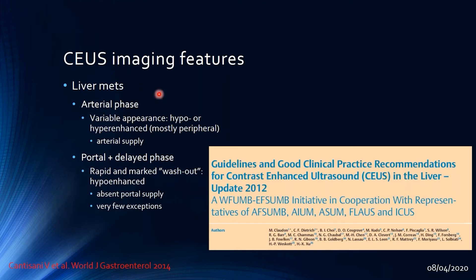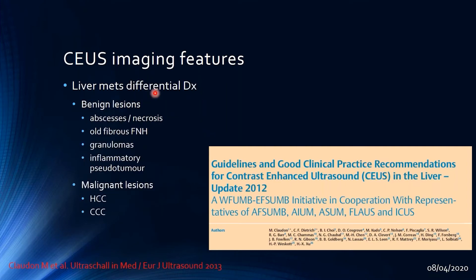Liver metastases have a variable appearance. In the arterial phase they can be hypo- or hyper-enhanced, mostly in the periphery due to their arterial supply. In the portal and delayed phase they show rapid and marked washout, appearing hypo-enhanced due to absent portal supply, with very few exceptions. They must be differentiated from benign lesions, abscesses, focal nodular hyperplasia, inflammatory pseudotumors, and malignant lesions including HCC and cholangiocarcinoma.